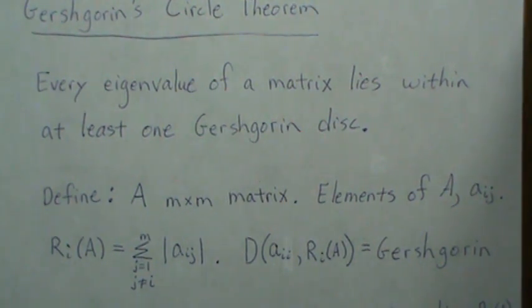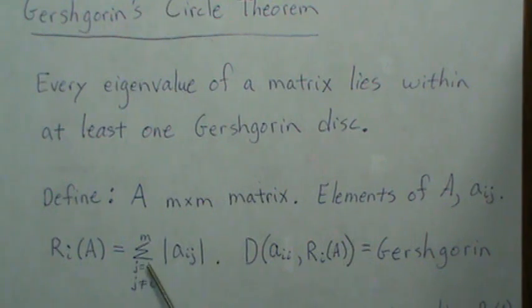So if we have any matrix m by m and the elements will be denoted by a_ij, then for row i we're going to sum all the elements in row i except for the diagonal element, and we're going to sum the absolute value, and that sum is going to be the row total for i.